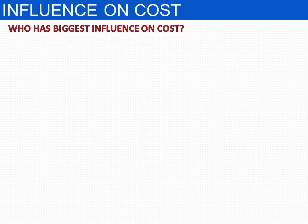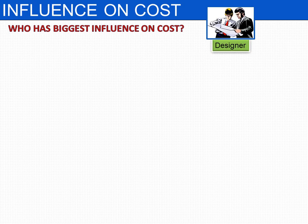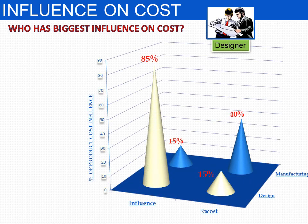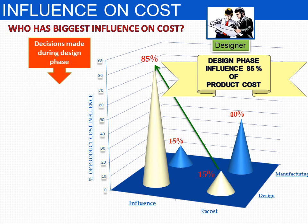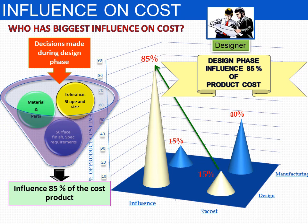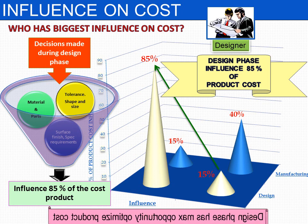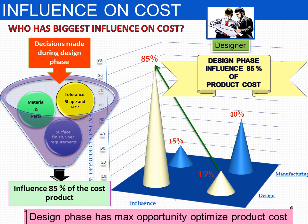Who has the biggest influence on cost? The designer. The decisions that the designer makes during product development, even though the incurred cost is only 15%, those decisions determine 85% of the product cost. Design influences 85% of the product cost, and therefore the design phase has the maximum opportunity to optimize the product cost. It is very essential to optimize the product cost at the earliest phase of product development.